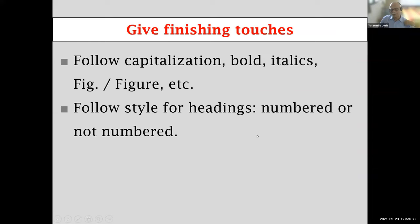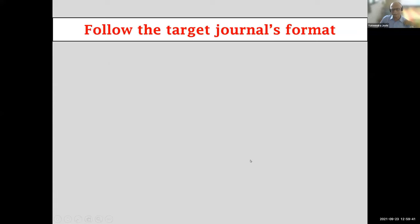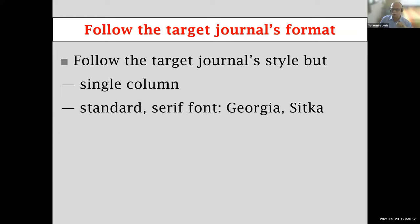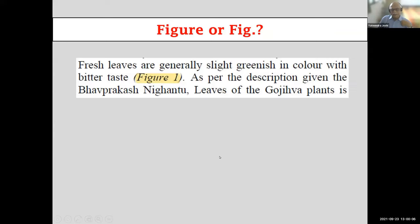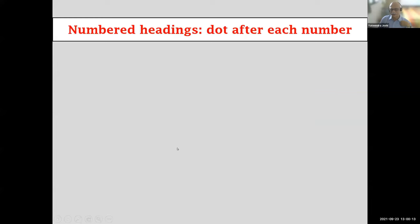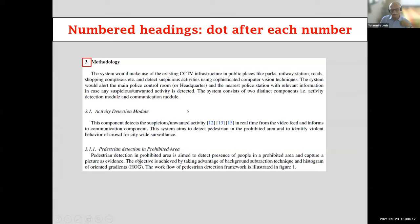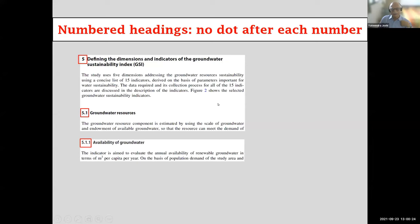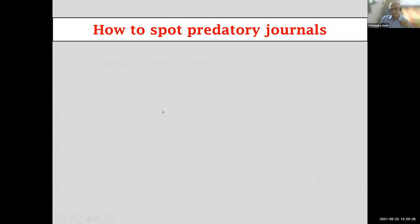For finishing touches, submit your manuscript in single column even if the journal prints in multiple columns. Use left justification even if the journal uses full justification. Use the font the journal specifies. I strongly recommend Georgia or Sitka over Times New Roman as they are easier to read on screen. Some journals spell 'figure' in full; some abbreviate it. Some use numbered headings with a dot after the number; some without; some with no numbers at all — follow your target journal.